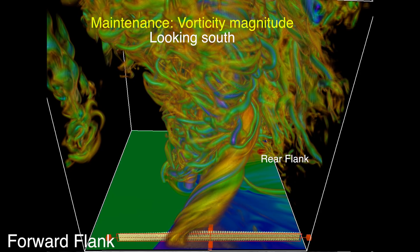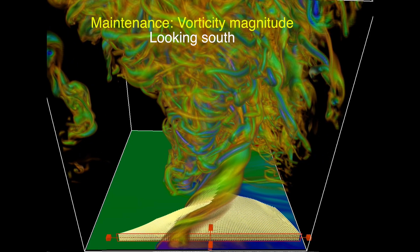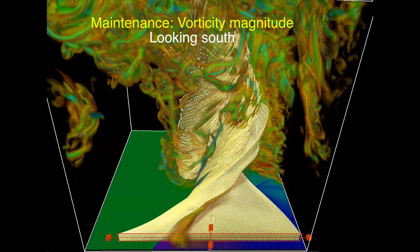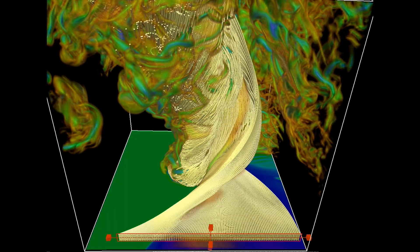In this sequence, we release particles every two seconds along the storm's forward flank boundary, showing the path of the air. Air ahead of the storm is shown to enter the storm's updraft that encircles the tornado, while air originating from the storm's cold pool can be seen spiraling in towards the tornado near the ground.